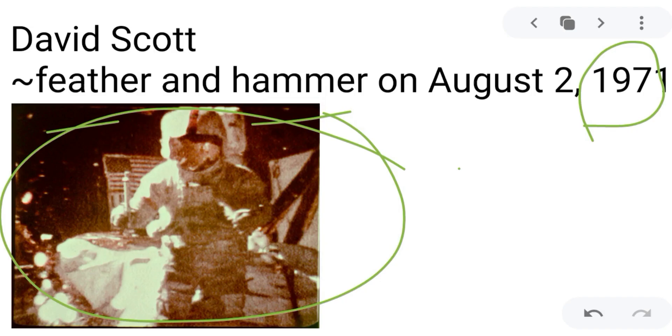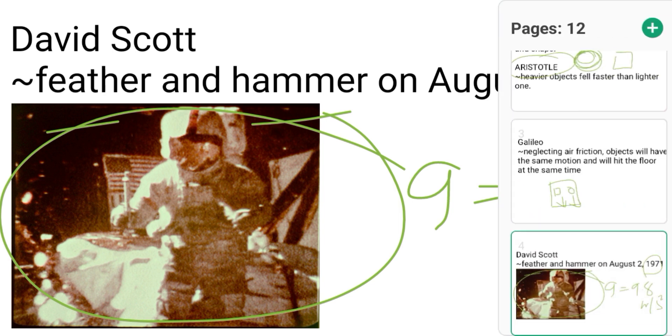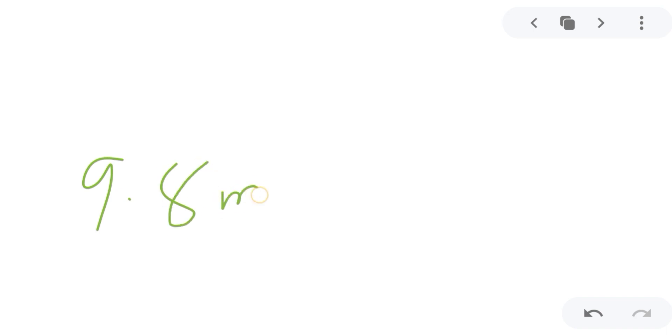Falling bodies is also known as acceleration due to gravity, represented by small g, and the equivalent value is 9.8 meters per second squared. This 9.8 meters per second squared, it is positive if the object is thrown downward.